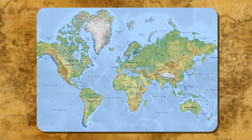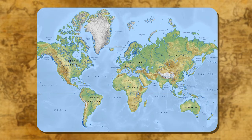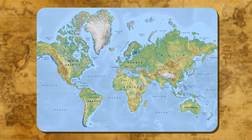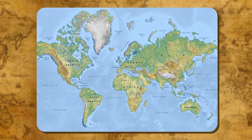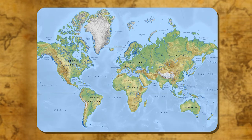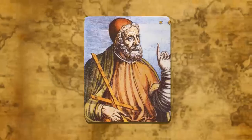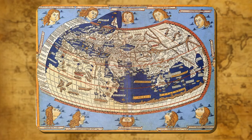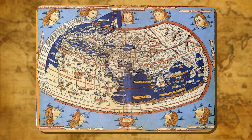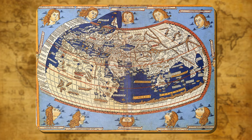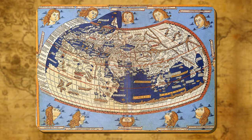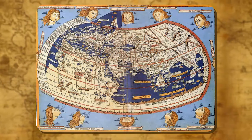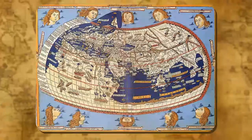Modern mapmaking. At present, mapmaking has become an important science. Maps are very precise. Before going to any region, you can have all kinds of things shown on maps. Ptolemy, an Egyptian geographer and mapmaker, made mapmaking a science. In his map, he showed direction by drawing a north line at the top of the map. The science of mapmaking is known as cartography.